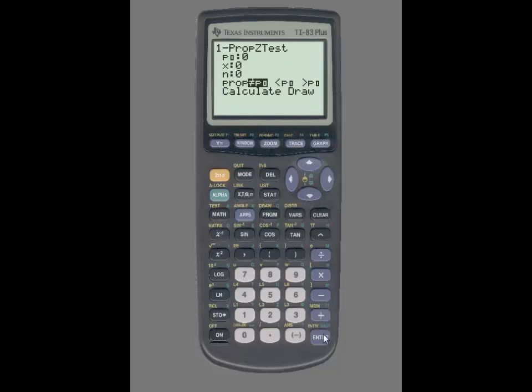On this screen, you'll want to enter the value of the null hypothesis and it was .65. Make sure you use a decimal here.